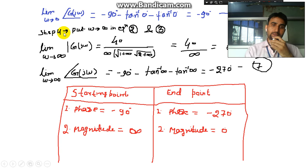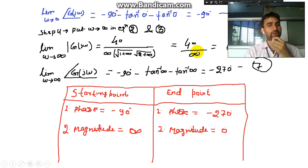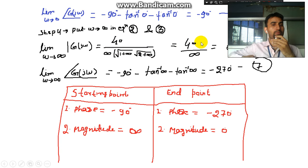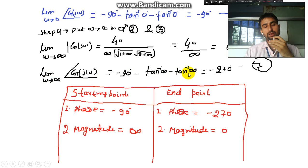Step 4: put ω → ∞ in the magnitude equation. We get 40 divided by (∞ · √(1+∞) · √(4+∞)) = 40/∞ = 0. For the phase at ω → ∞: −90° − tan⁻¹(∞) − tan⁻¹(∞) = −90° − 90° − 90° = −270°. So the plot ends at magnitude 0 at −270°.